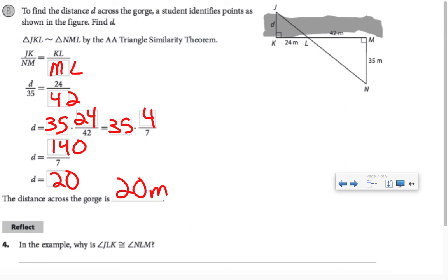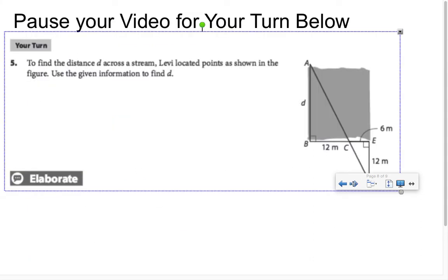So earlier I mentioned that I'd be coming back to the topic of why is angle JLK congruent to angle NLM. That's these two angles. And by now, it should be pretty automatic for you to realize those angles are vertical angles. So the angles are congruent by the vertical angle theorem. Pause your video to work through the your turn below.